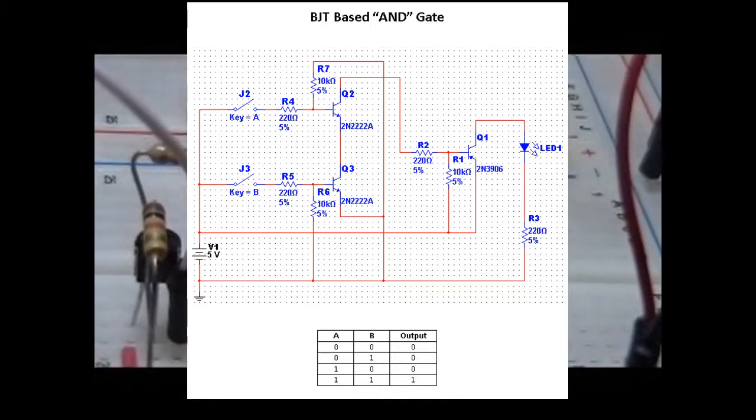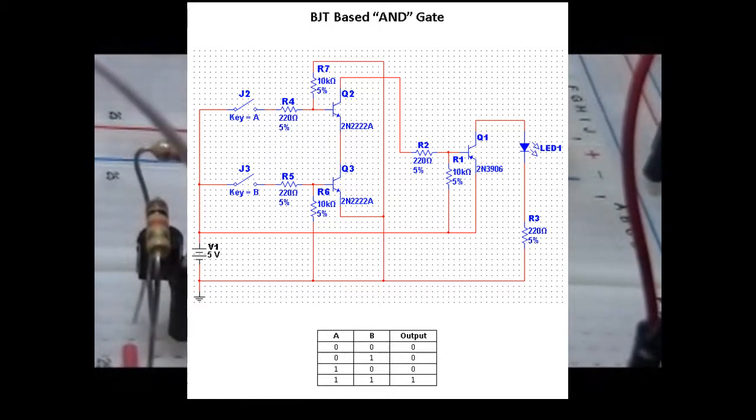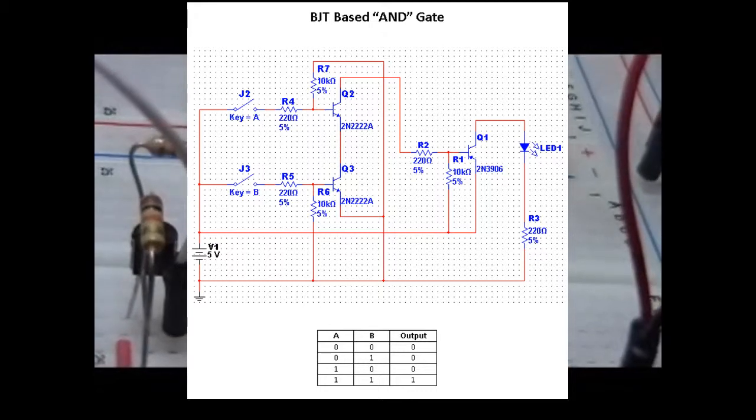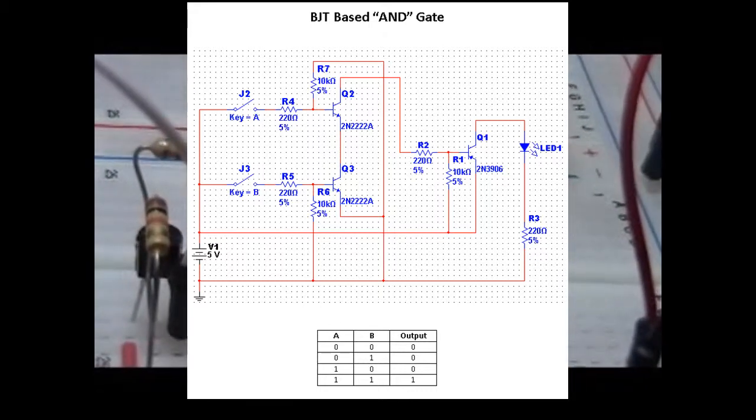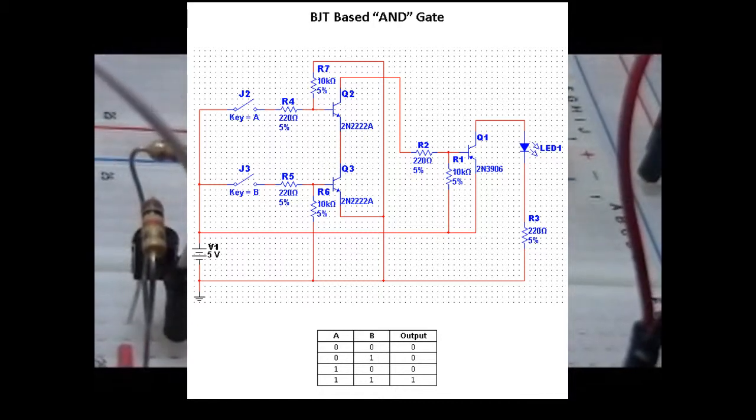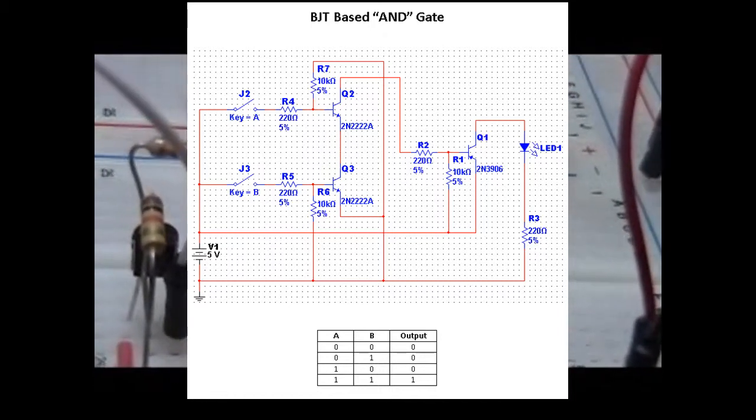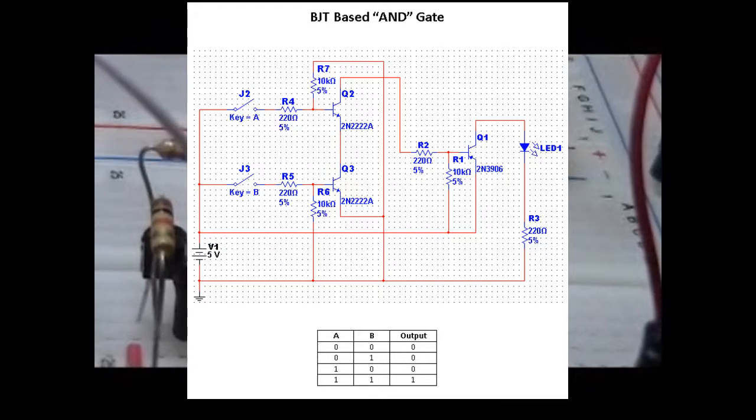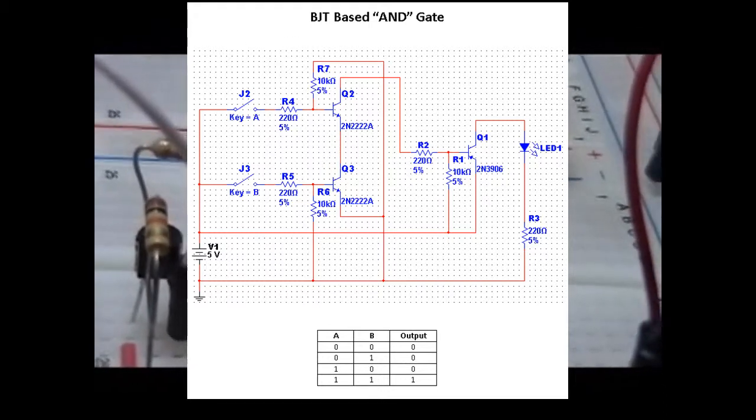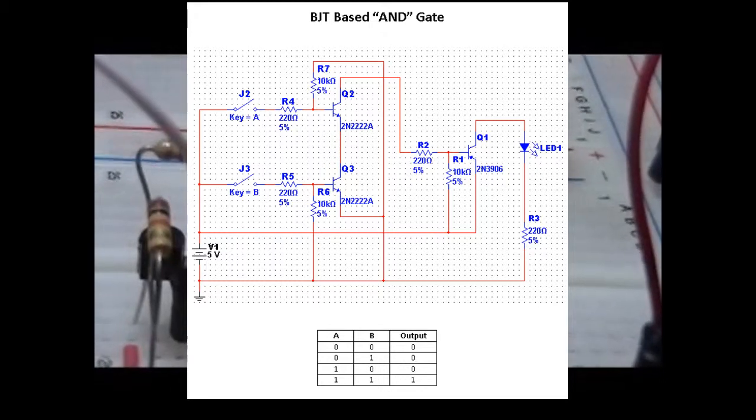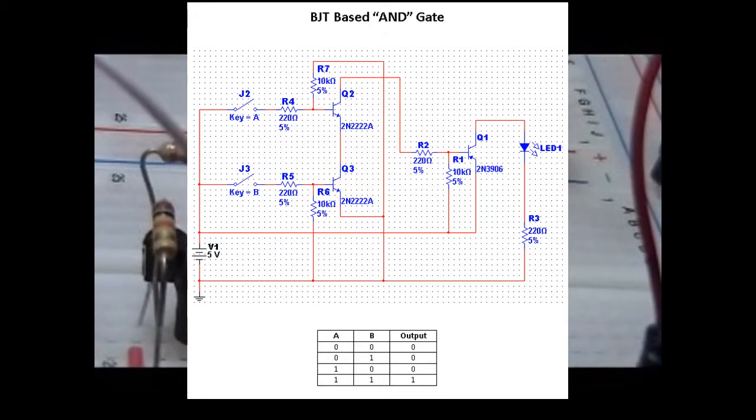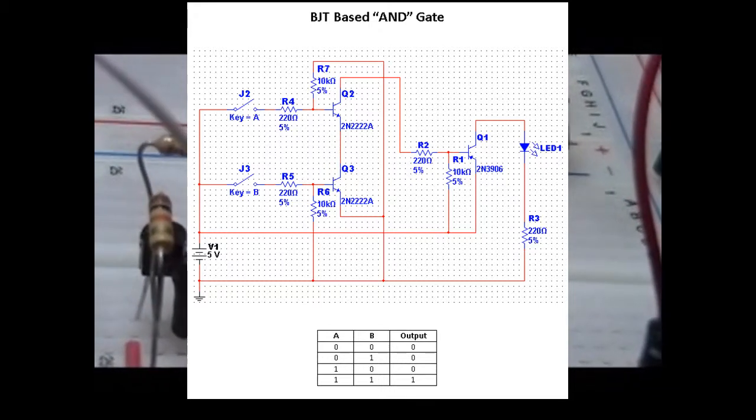So when both switches are closed, at that point both transistors see a positive potential at their base and turn on, go into active mode, in which case the ground potential coming into Q3 is sent all the way through both transistors and applied to the base of Q1. Being a PNP transistor, when this gets ground at the base, it goes into active mode and basically the positive 5 volts from the source travels through Q1, through the LED, through the 220 ohm R3 resistor and back to ground. That's what activates this circuit.